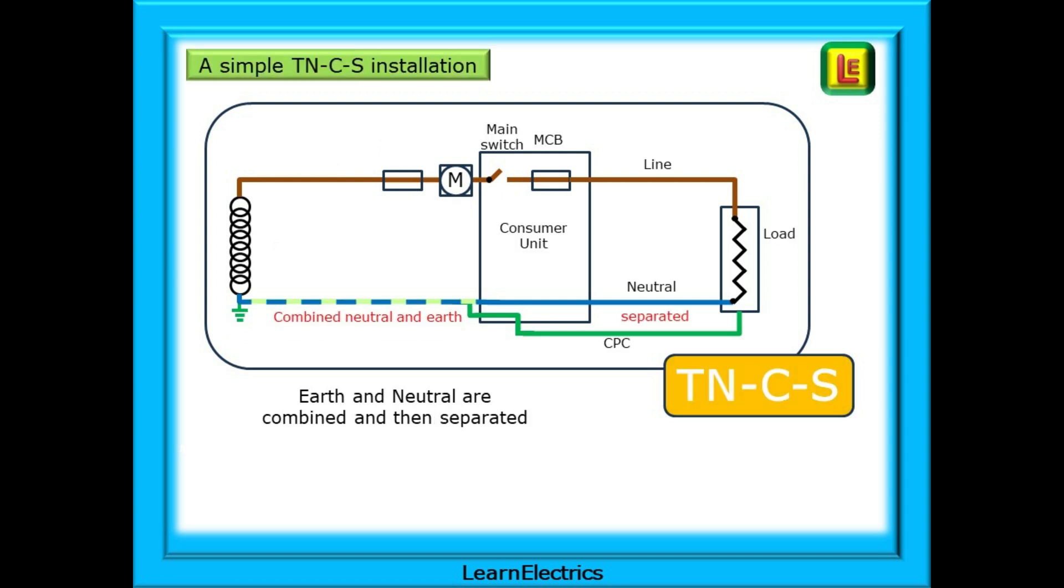Compare this to a TNCS system where the cable from the transformer to the building has the earth and neutral combined together and at the intake position just before the consumer unit they are separated into two individual conductors, earth and neutral. We call this system TNCS - earth and neutral combined and then separated. From the consumer unit the systems are the same.